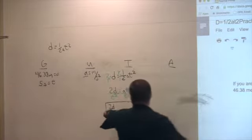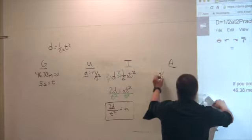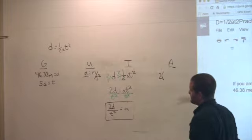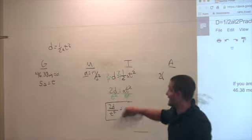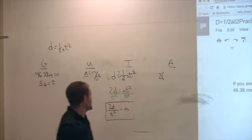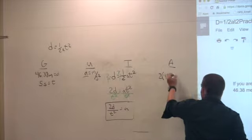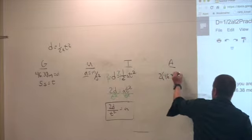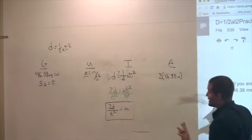So, look. Now, I use this over here. Two times, what's my D? See, I have it already labeled under my givens. I just look over my givens. Two times 46.38 meters. Now, just meters.